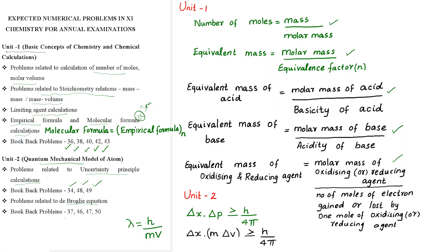De Broglie equation related bookback problems: 37, 46, 47, 50. The important formula used in this unit is: Δx · Δp ≥ h/4π. Since Δp equals mass times velocity, this becomes: Δx · m · Δv ≥ h/4π.